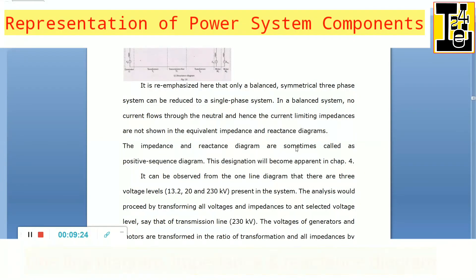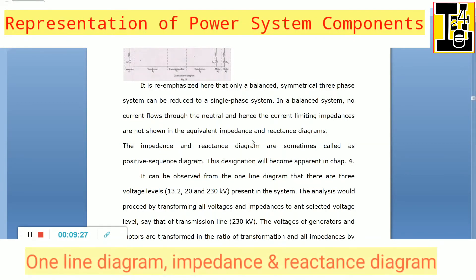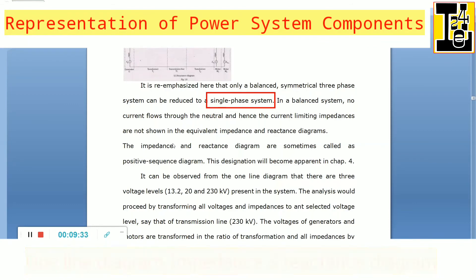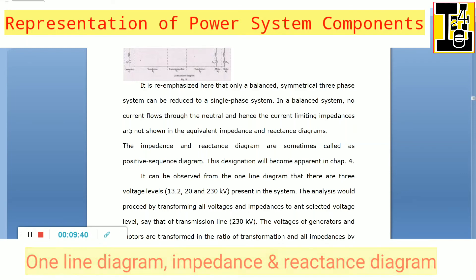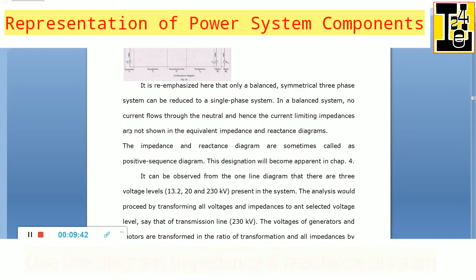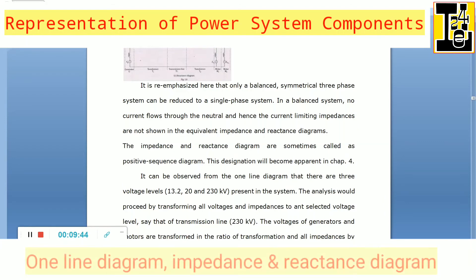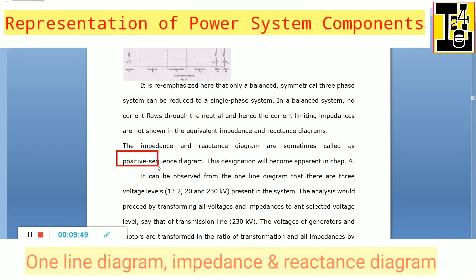It is emphasized that only a balanced symmetrical three phase system can be reduced to a single phase system. In a balanced system, no current flows through the neutral, and hence the current through limiting impedances is not shown in the equivalent diagrams. The impedance and reactance diagrams are sometimes called the positive sequence diagram.